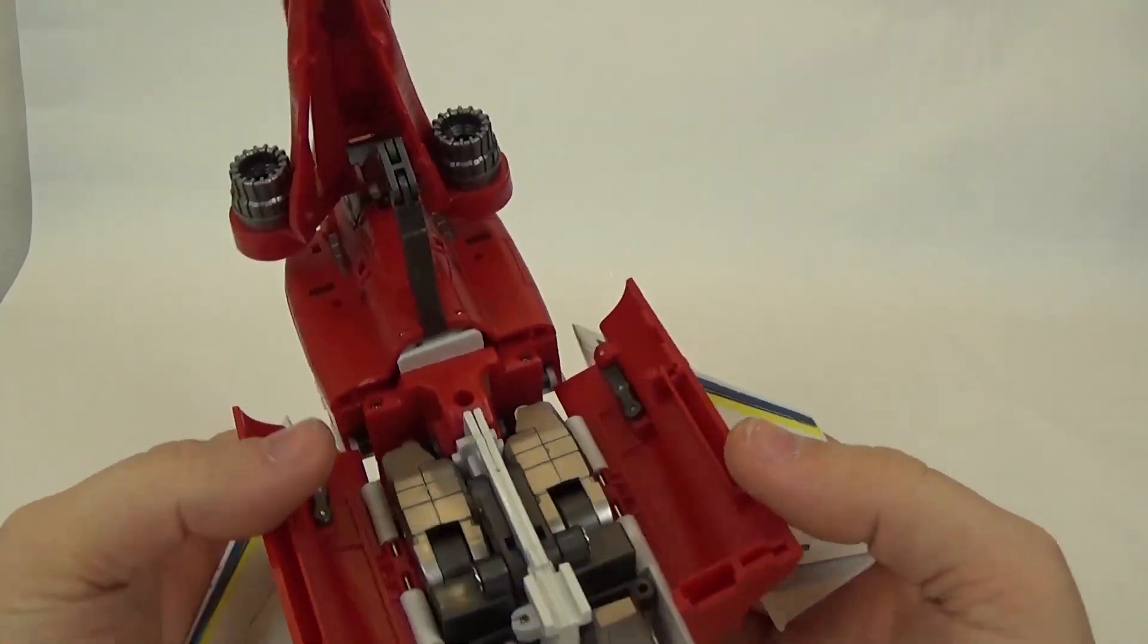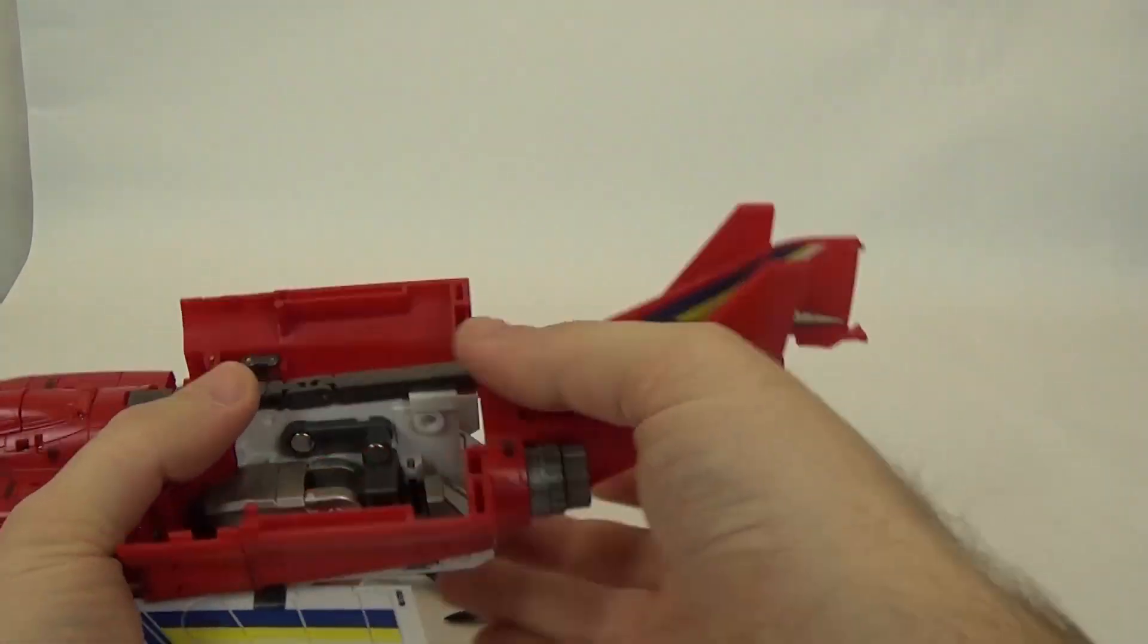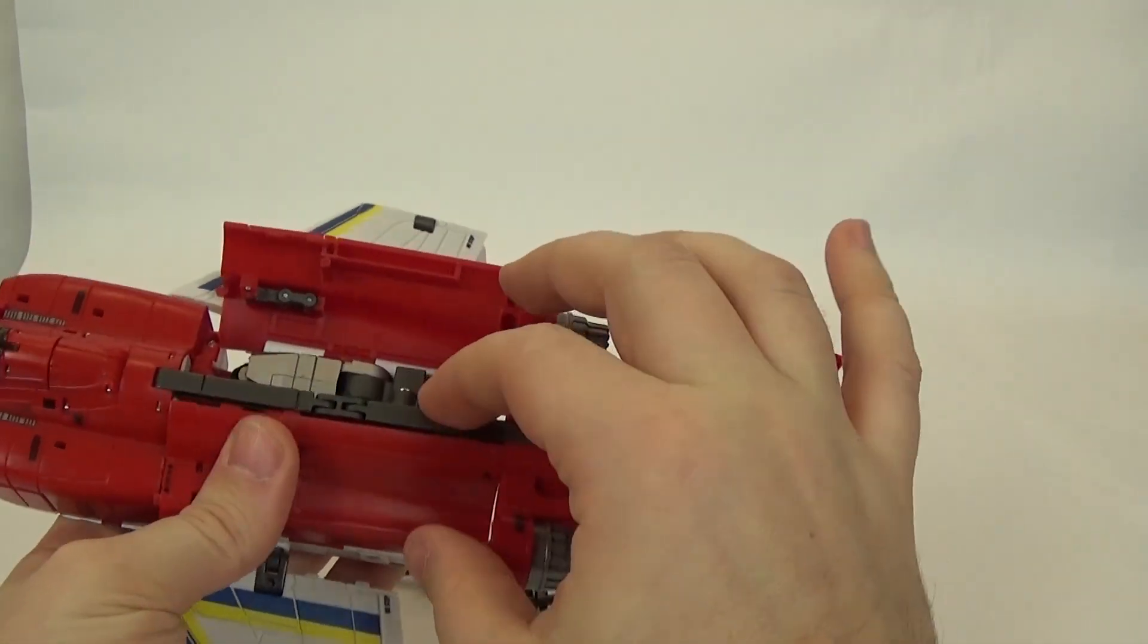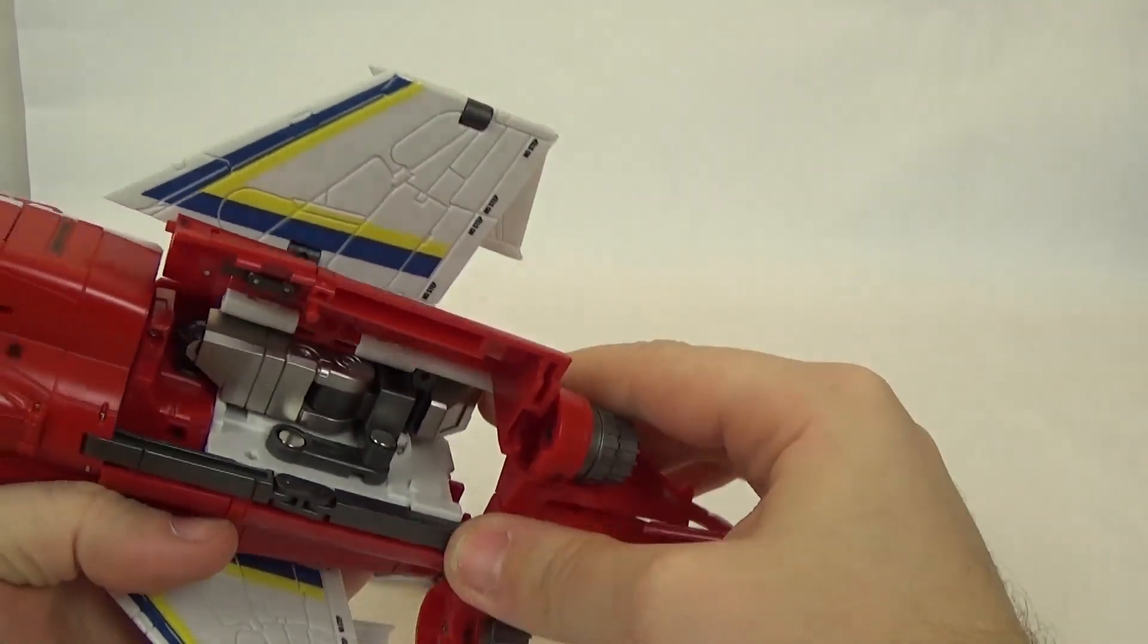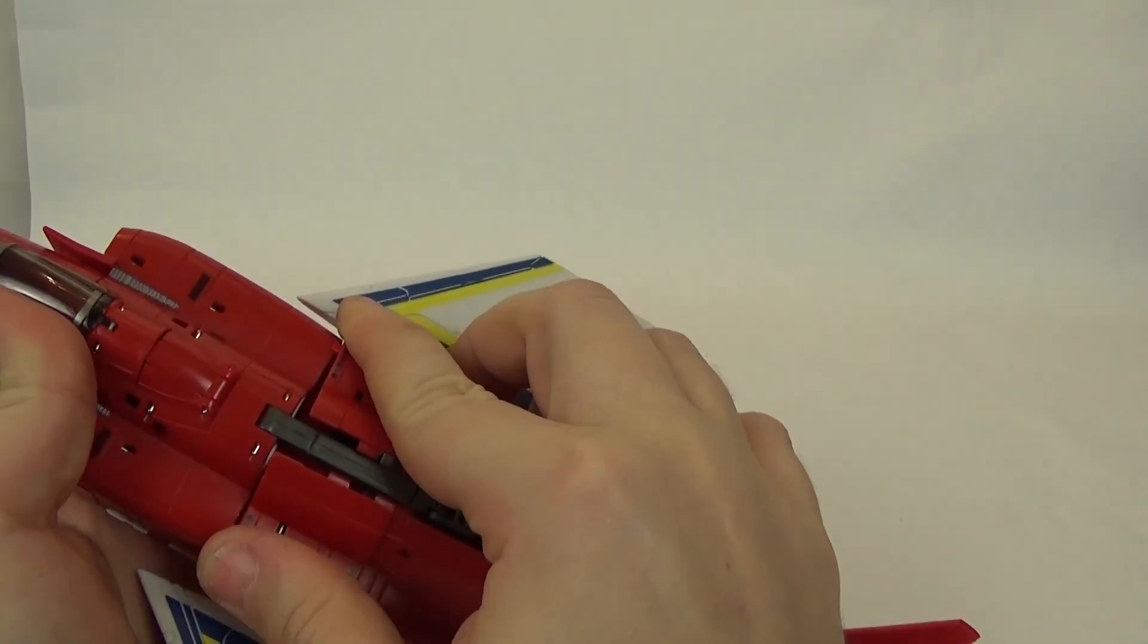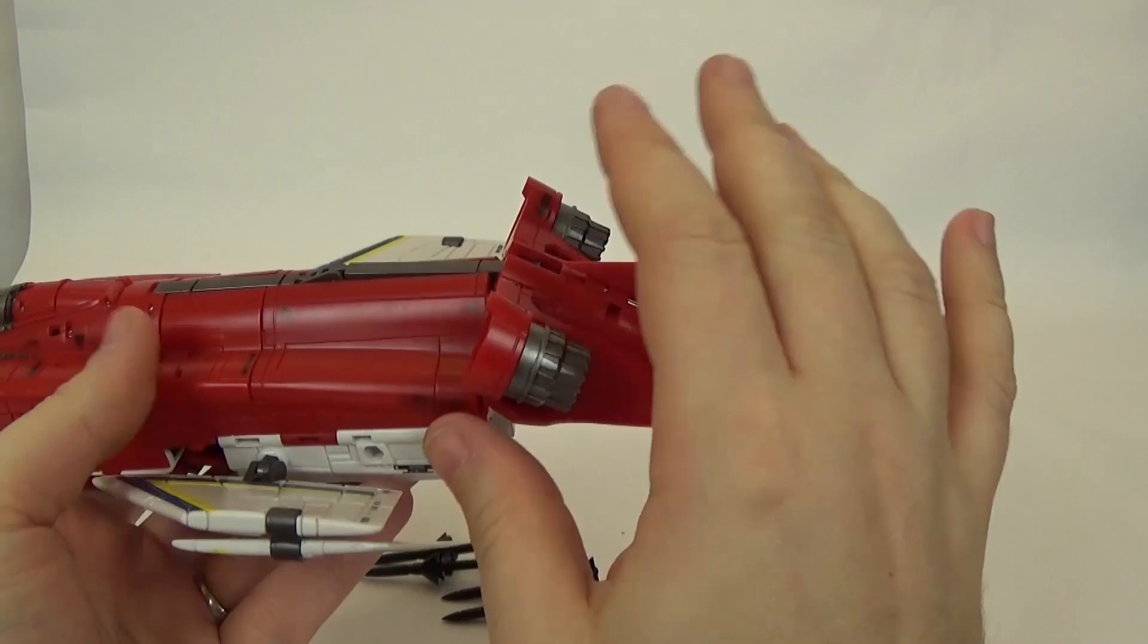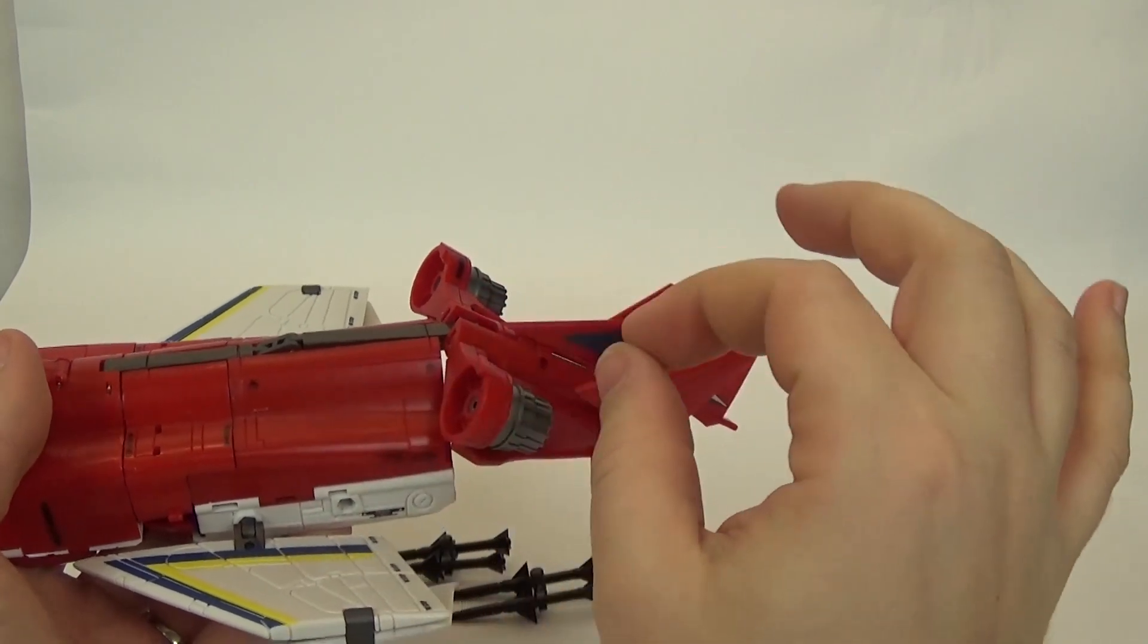And, then before you close all this stuff up, bring this back panel back. And, that will tab in right there. And, then we'll bring these panels up and around. And, they will tab in to this piece right here. So, you will have to just bend the plastic to make room for all that.